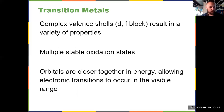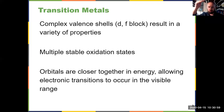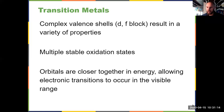At the end of this chapter, we're going to see that the orbitals in transition metals are closer together in energy, which makes it easier for electrons to jump up or fall down in energy. Those electronic transitions can occur in the visible range, which is why transition metal compounds tend to have color to them, as opposed to an organic compound, which is typically just a white solid.